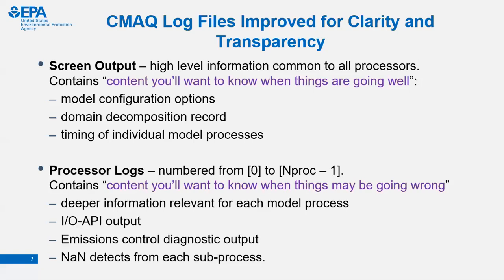The screen output is content you'll want to know when things are going well: model configuration options, domain decomposition information, timing of individual model processes, etc. The processor log files contain detailed information — content you'll want when things might be going wrong or when you want to check that a modification had the intended effect. This includes deeper information for relevant model sub-processes, IO API output information, information about emissions controls and diagnostics, and NaN checks.